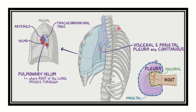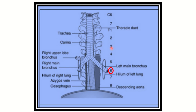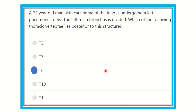Counting from the top: first, second, third, fourth, fifth, sixth — we can see the left bronchus is located at the level of thoracic vertebra six. In the second picture, we can also confirm that at the thoracic six level the left main bronchus is located. This is very important for all types of exams. Our answer is thoracic vertebra level six.